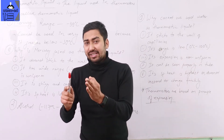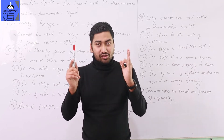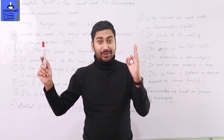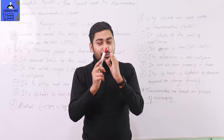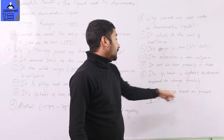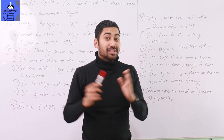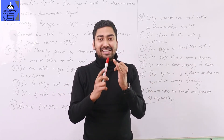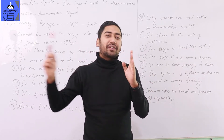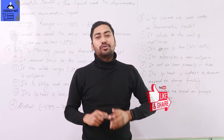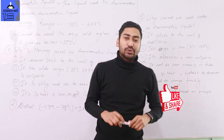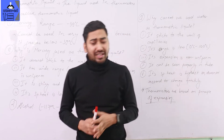It should be uniform. Thermometers are based on the principle of expansion. So from 0 to 1 degree Celsius it should expand, and from 99 to 100 degrees Celsius it should also expand — the expansion should be uniform. The thermometric liquid should have uniform expansion.